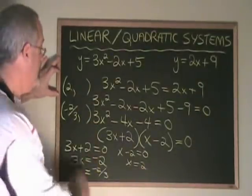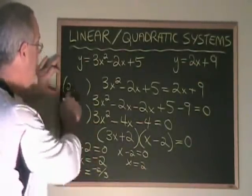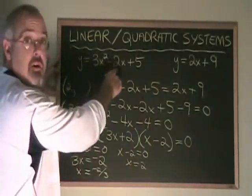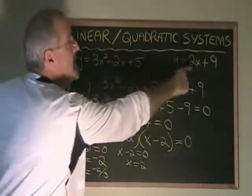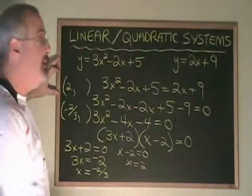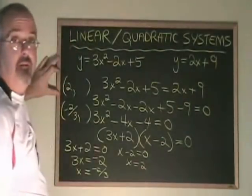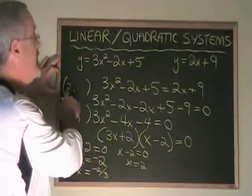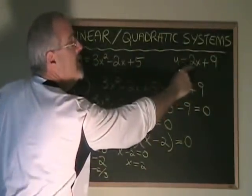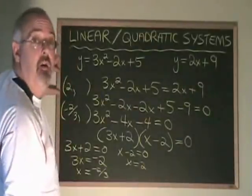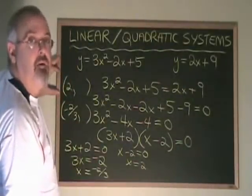All I have to do to find the points of intersection is plug these x-coordinates into either equation, the one from the quadratic or the one from the straight line. I'm going to plug them into the straight line because it's faster and easier. If I plug a 2 into the x position of this, I get y equals 2 times 2 plus 9, y equals 4 plus 9, y equals 13.